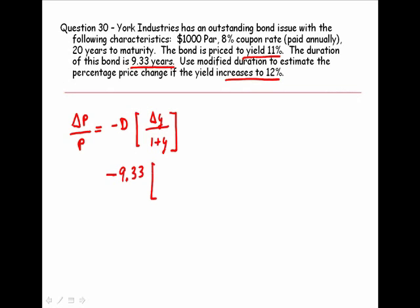Now in the numerator, we have to put the change in the yield. The yield is going to change from 11% to 12%. So that's 1% change and it's positive. In the denominator, I've got 1 plus my original yield.